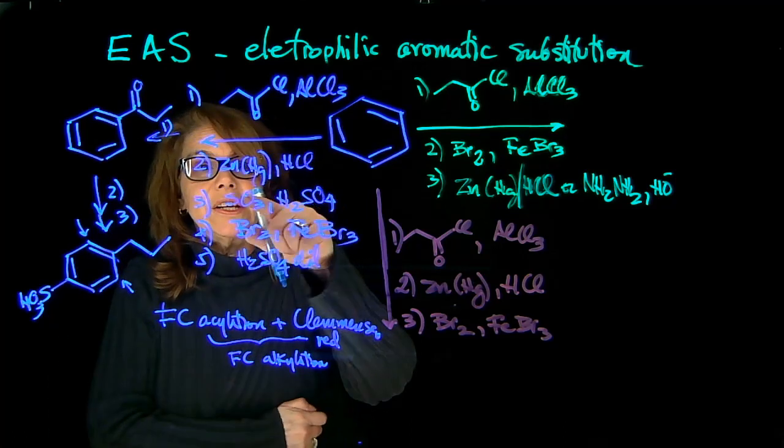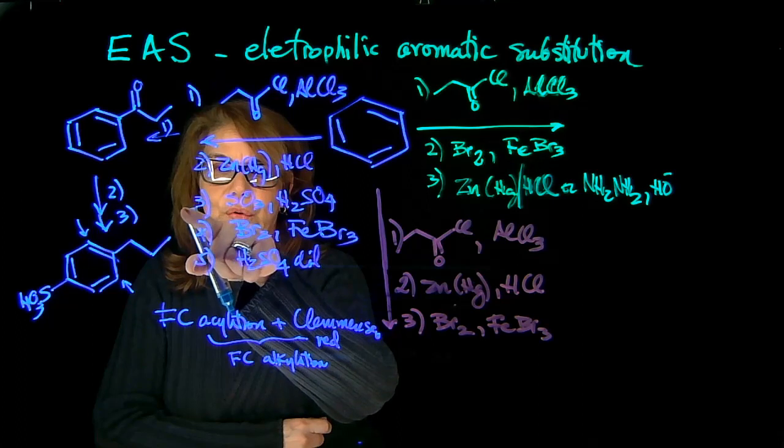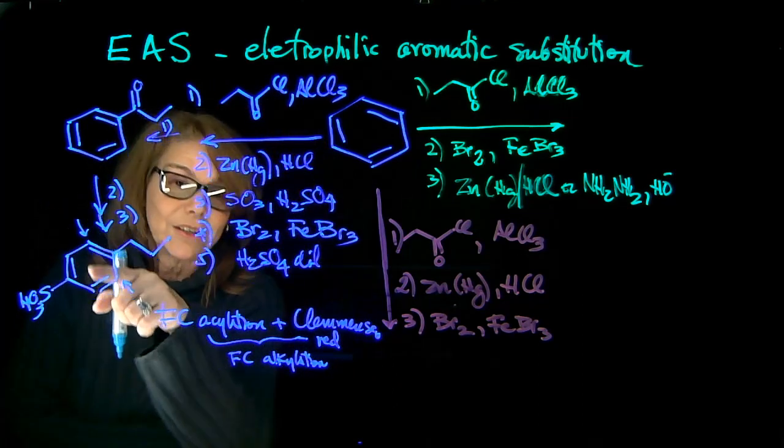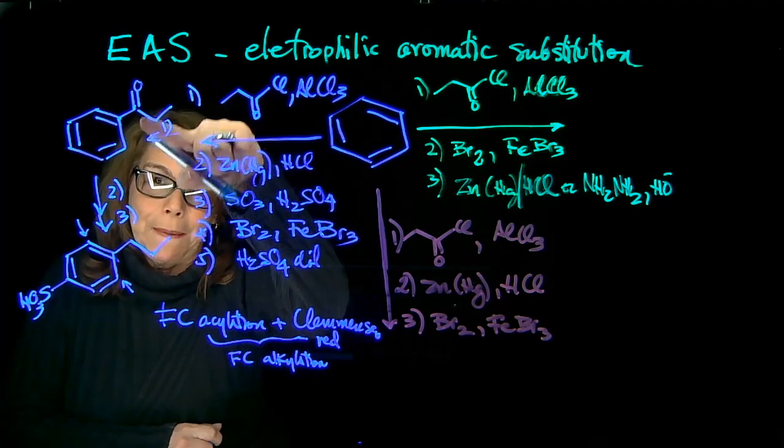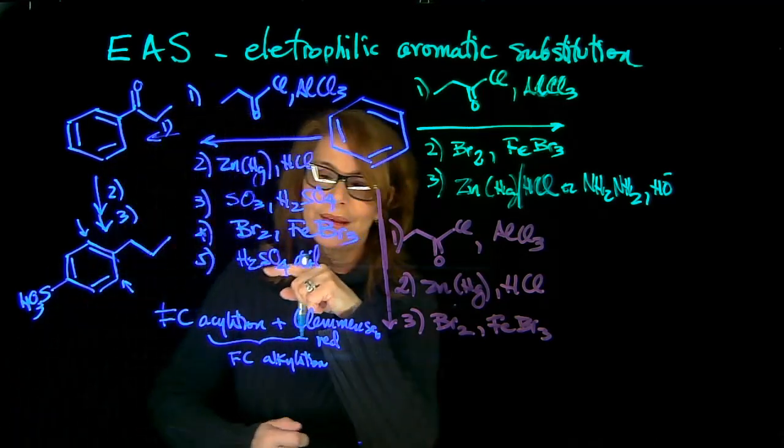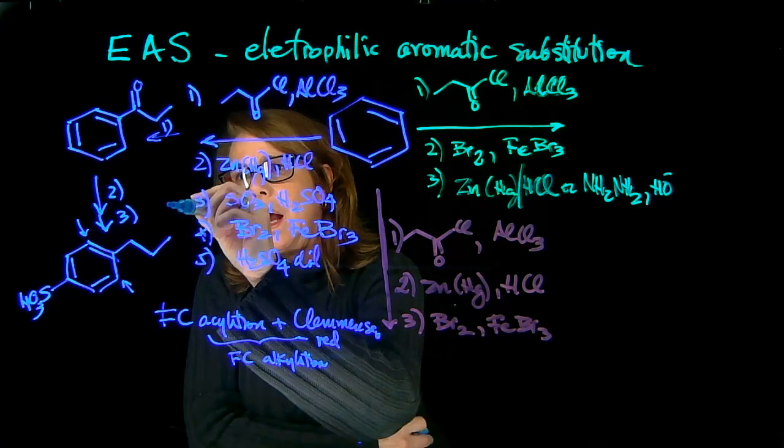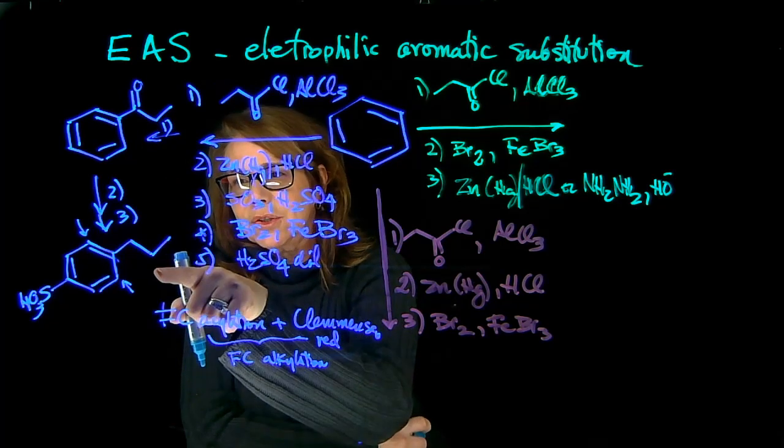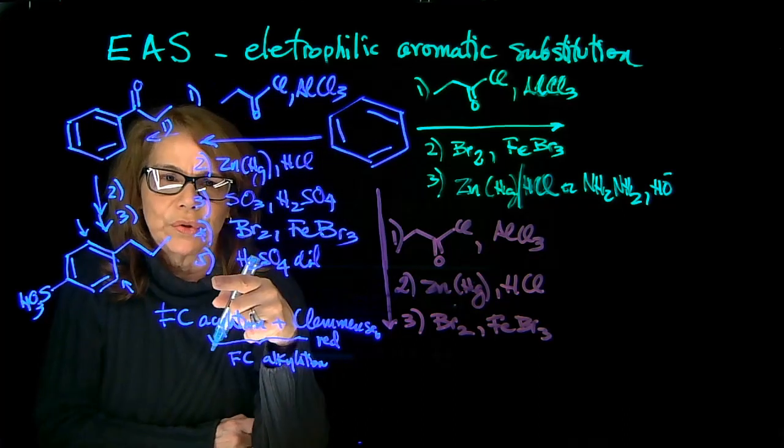Notice that if we change the order here, let's say that we change this and we do first the sulfonation and then the reduction. This is going to change the outcome because this carbonyl is deactivating and meta-directing. But we do that in the other sequences. So, acylation, Friedel-Craft, reduction Clemson, and sulfonation. So steps one, two, and three.